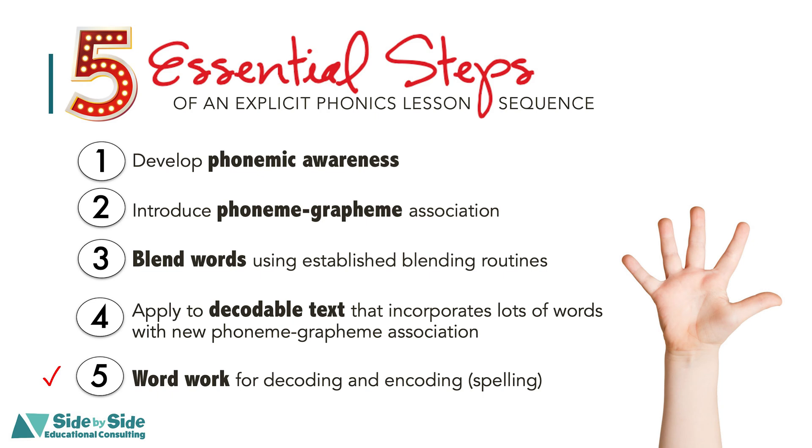Word Work is an opportunity for kids to solidify their decoding and encoding processes so that they can both read words and spell words. Decoding is the ability to blend sounds to create a word, or sound out a word — this is translating print into speech. Whereas encoding is the opposite: it's the ability to spell words, or in other words, to translate speech into print.